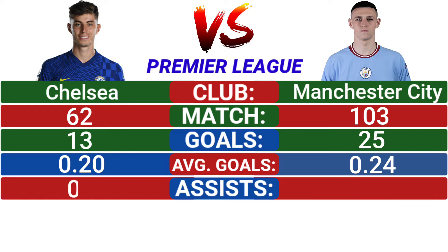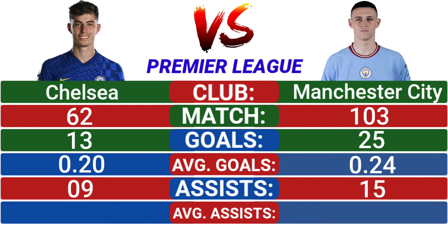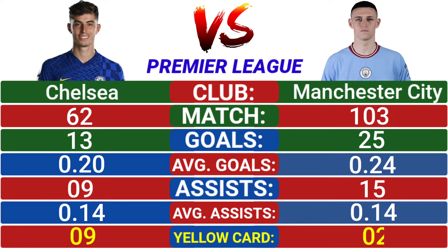Havertz provided 9 assists and Phil Foden provided 15 assists. Havertz's average assists per match is 0.14, and Phil Foden's average assists per match is also 0.14. Havertz received 9 yellow cards, and Phil Foden received 12 yellow cards.